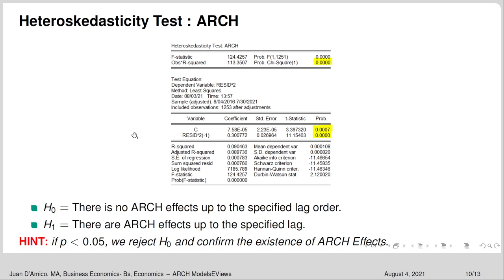Here we have the test output. The null hypothesis is that there are no ARCH effects up to the specified lag order. The p-value is smaller than 0.05, so we reject the null hypothesis and confirm that ARCH effects exist. We included one lag in the test specification, and we can see that at the 5% significance level, including that one lag is appropriate. So the heteroskedasticity test confirms there are ARCH effects, and including one ARCH lag is appropriate.